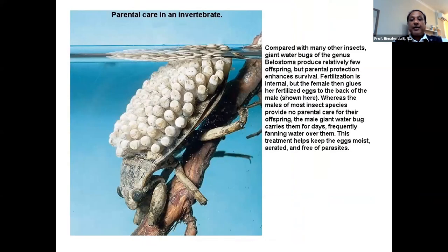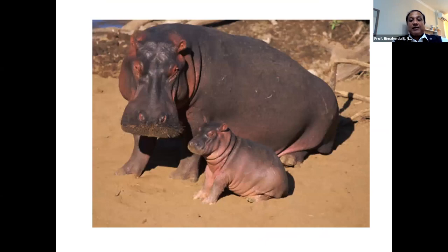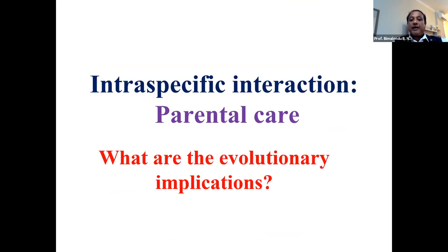Different animals show a great diversity of parental care. For example, the Belostoma — the giant water bug — is an invertebrate where the female glues her eggs on the back of the male. While most male insect species provide no parental care, the male giant water bug carries the eggs. There are many exceptions where males take part in parental care, such as the male marmoset. We can also see parental care in a baby hippo. What are the evolutionary implications of parental care? I leave these questions for participants to think about and provide feedback.